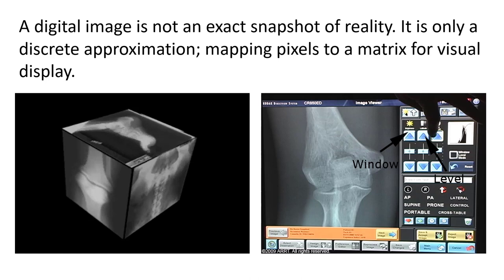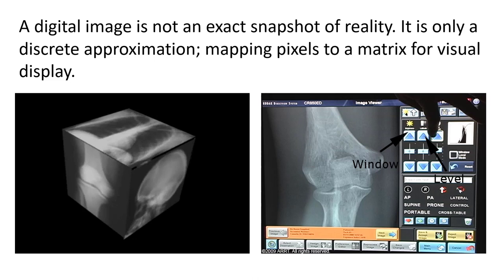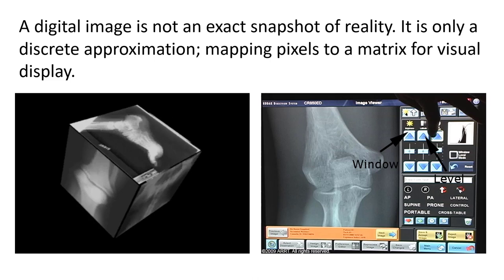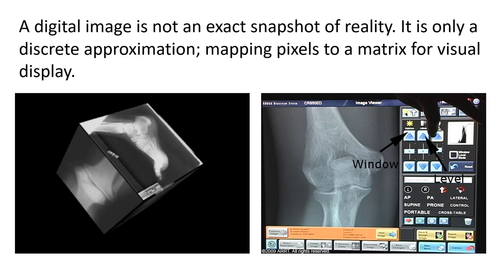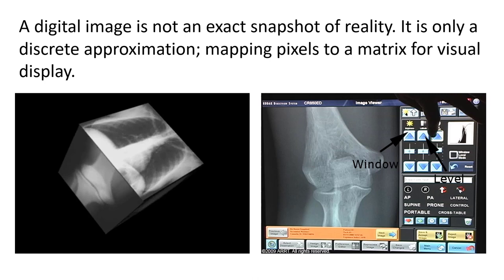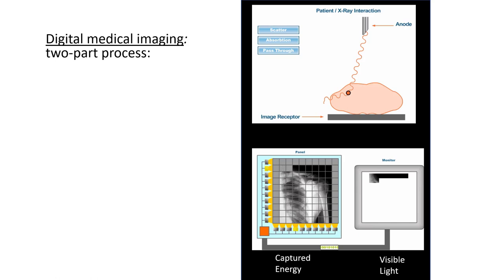A digital image is not an exact snapshot of reality. It is only a discrete approximation mapping pixels to a matrix for visual display. Although the data is precise, the human that is interpreting the data relies on their visual perception of reality. Remember, no two humans are identical and perceptions vary from person to person.